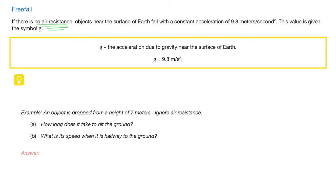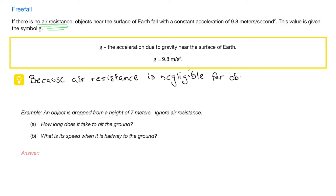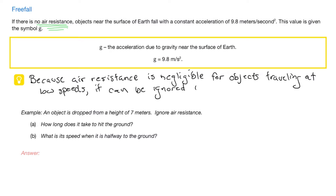The direction of that acceleration is always downwards. Because there is very little air resistance acting on objects at low speeds, we can safely ignore air resistance in these situations. Later in the course, we will actually be able to drop an object and consider its motion including air resistance, but this will require some differential equations, so it's best postponed to the very end of the course.